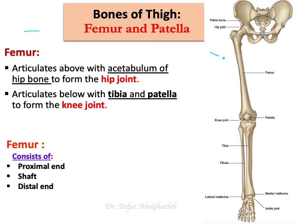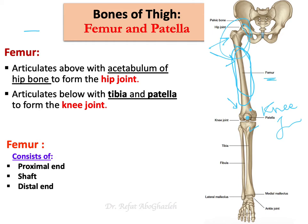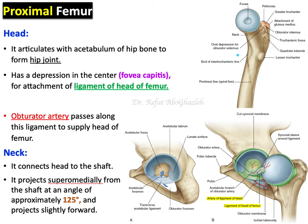Now let us move to the femur, the longest bone in the body. The femur articulates superiorly with the acetabulum of the hip bone to form the hip joint, and inferiorly with the tibia and patella to form the knee joint. For ease of study, we divide it into three parts: the proximal part, the shaft, and the distal part.